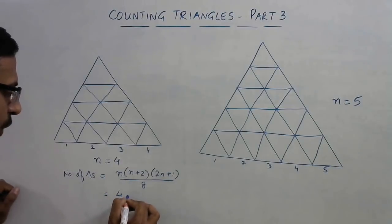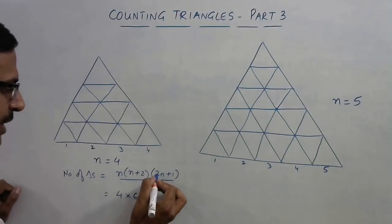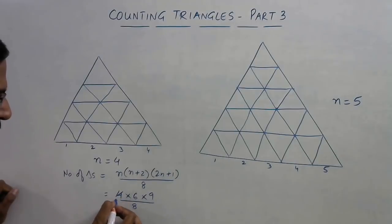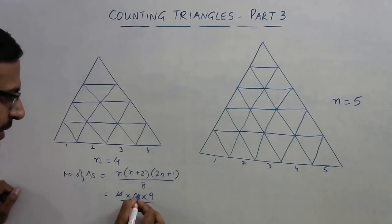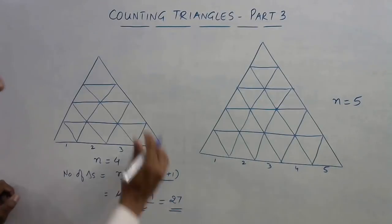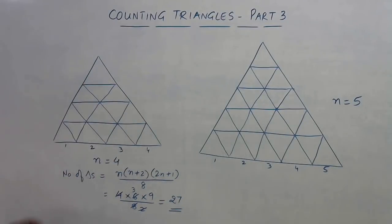This is the formula I told you. Just substitute the value of n here - this is 4 and 4+2=6, 4×2=8+1=9, and upon eight. Now you can cancel: four ones, four twice, two ones, two thrice, and nine into three - twenty-seven triangles is the answer for this question. Very easy method.